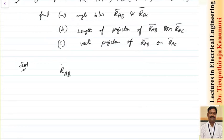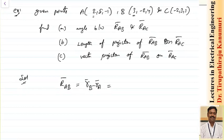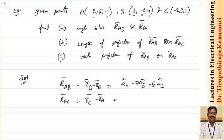Let us solve this. First, RAB equals RB minus RA. Subtracting B minus A: x-component is 3 minus 2 = 1, y-component is -2 minus 5 = -7, z-component is 4 minus (-1) = +5. So RAB = 1·Ax - 7·Ay + 5·Az. Similarly, RAC equals RC minus RA, giving C minus A: -2 minus 2 = -4·Ax, 3 minus 5 = -2·Ay, and 1 minus (-1) = +2·Az. So RAC = -4·Ax - 2·Ay + 2·Az.